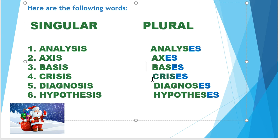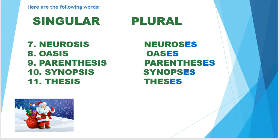Number five: diagnosis — plural: diagnoses. Number six: hypothesis — plural: hypotheses. Number seven: neurosis — plural: neuroses. Number eight: oasis — plural: oases. Number nine: parenthesis — plural: parentheses. Number ten: synopsis — plural: synopses. Number eleven: thesis — plural: theses.